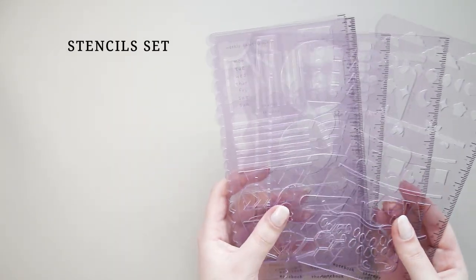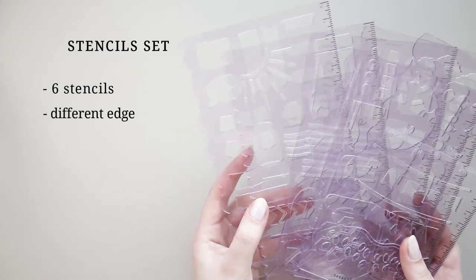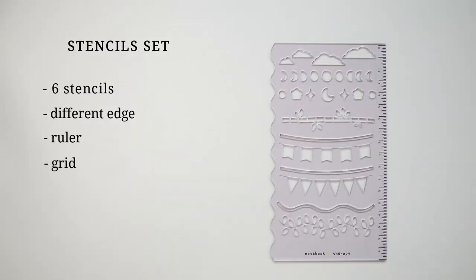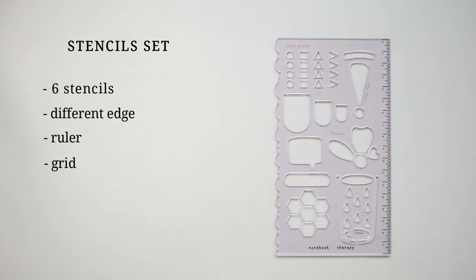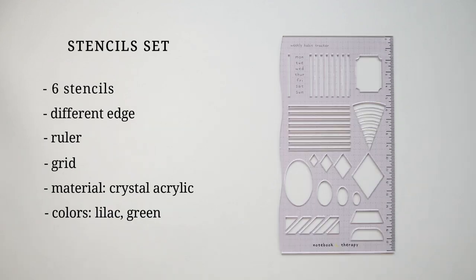Each set comes with six different stencils, all of them with different shapes, a different fun edge and a ruler. One of them has a grid that I will show in a notebook later on. They are made of crystal acrylic so they are very durable and are available in this lilac tarot color and in green mint matcha.